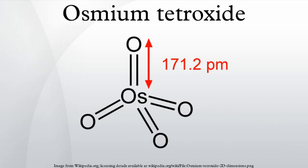Oxo fluorides: Osmium forms several oxo fluorides, all of which are very sensitive to moisture. Purple CsOsO2F4 forms at 77 K in an anhydrous HF solution: OsO4 + 2 CsF2 → CsOsO2F4 + 2 CsOsO2. OsO4 also reacts with F2 to form yellow OsO3F2: 2 OsO4 + 2 F2 → 2 OsO3F2 + O2.